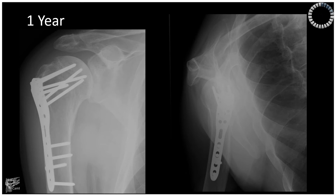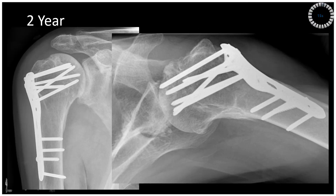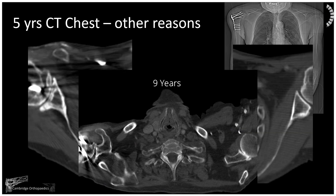Radiographs at one year. Radiographs at two years — and why was the patient brought back at two years? Radiographs at one year; the CT scan of the chest was done for unrelated injuries. Five years later, nine years from injury, arthritis was noticed on the contralateral side.